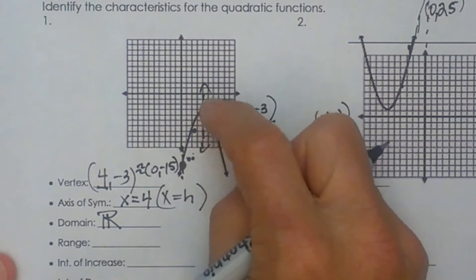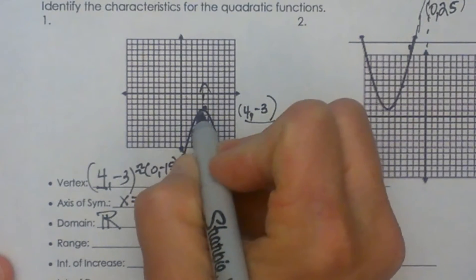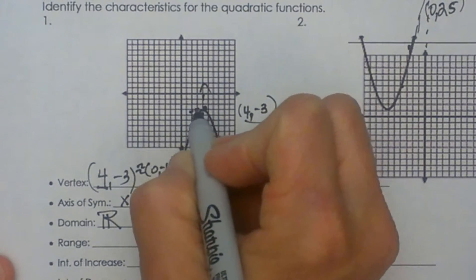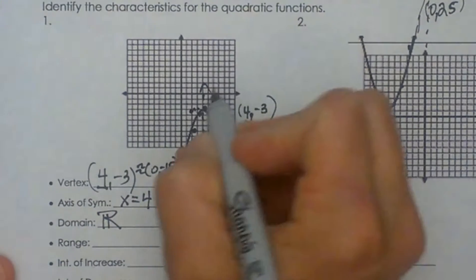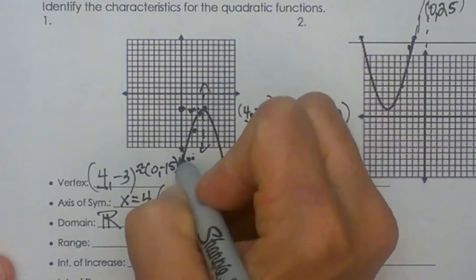Now the range, that is your y values. So as you can see we start here on the y axis and go down. So what we are going to do is we are actually going to read that off the y axis because domain is your, or your range is your output. So let's go over.